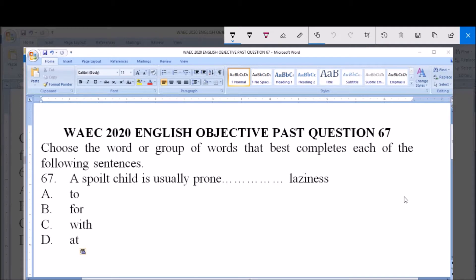A spoiled child is usually [blank] laziness. Option A: to. Option B: for. Option C: with. Option D: at.